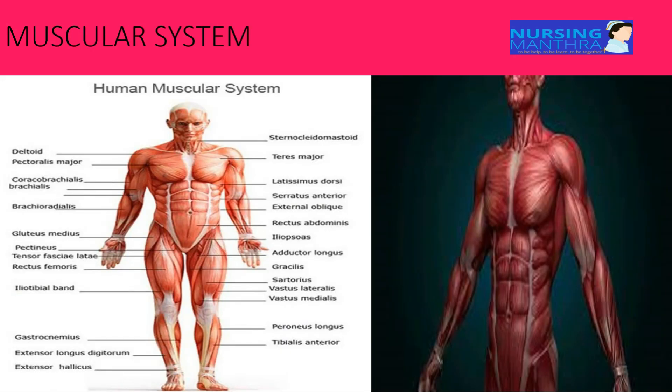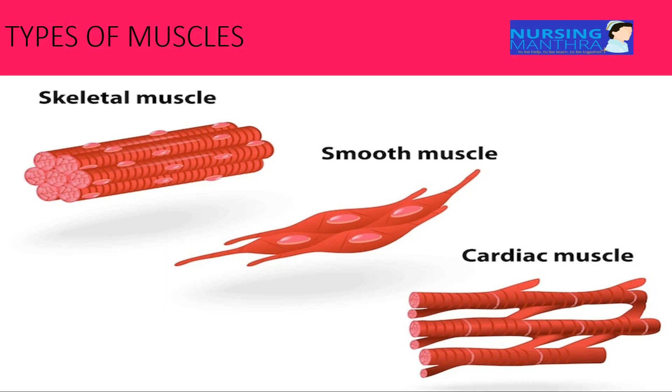Now we can see the muscular system. The muscular system consists of muscles with muscle fibers. Muscles provide force to move the bones and help in maintaining posture. Muscles are attached to bones with the help of tendons. There are mainly three types of muscles.